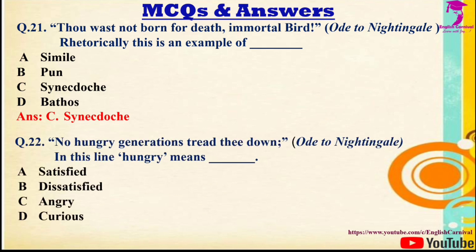Question 22: 'No hungry generations tread thee down' — in this line, 'hungry' means — Options: A) Satisfied, B) Dissatisfied, C) Angry, D) Curious. The correct answer is B — Dissatisfied.